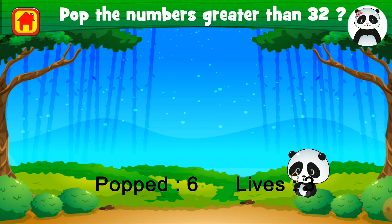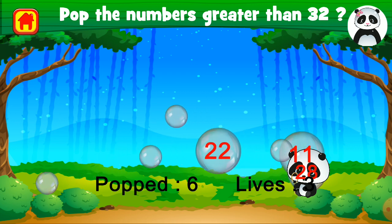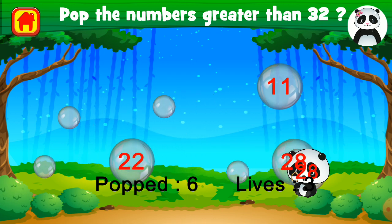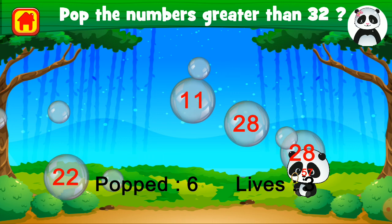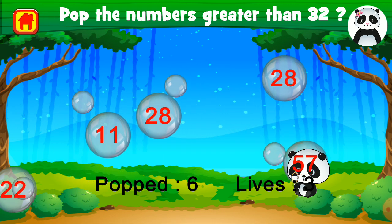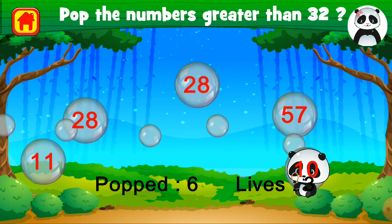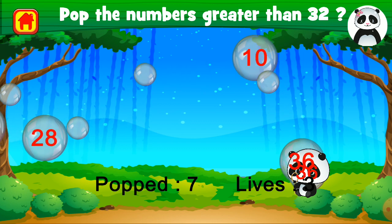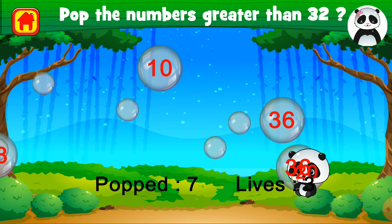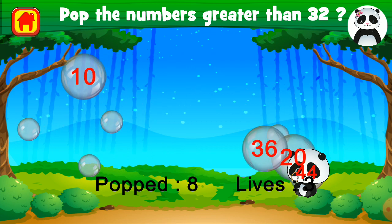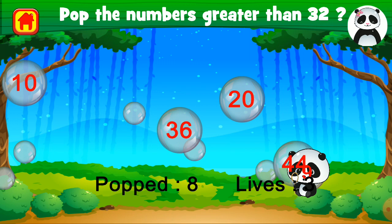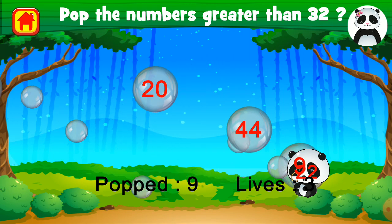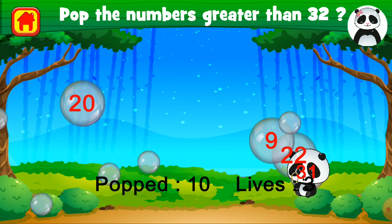Pop the bubbles with numbers that are greater than 32. 22 is less than 32 so we do not pop. 11 is also less. 28 is again less. But 57 is greater than 32 — pop it. Brilliant. 10 is less than 32. But 36 is greater — let's pop it. Fantastic. 36 again greater than 32. Excellent. 44 is also greater than 32. Fantastic. Thank you.